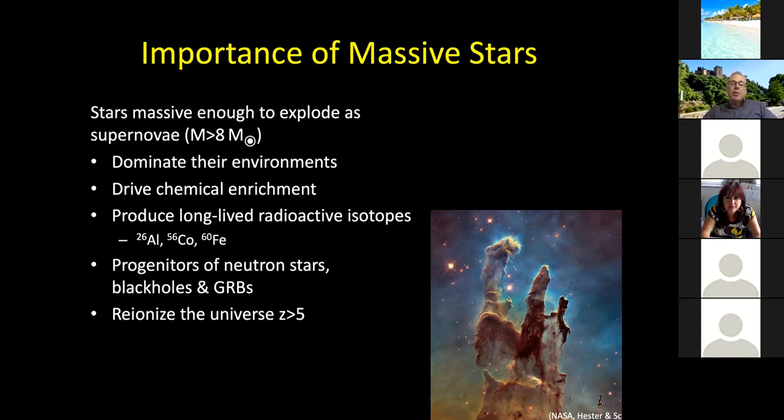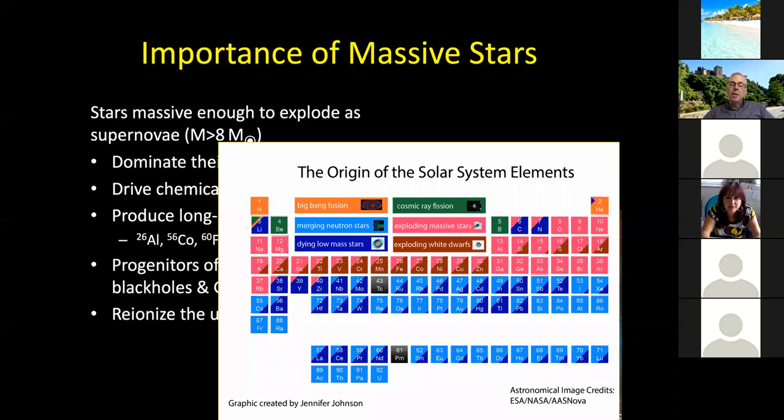They're important because they dominate their environments. Massive stars like this have huge outputs of both radiative and kinetic energy in terms of their winds. So they very much dominate what's going on around them. They sculpt the clouds they form in, have an impact on the current star formation and the future star formation.